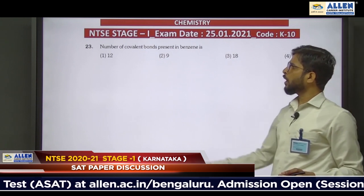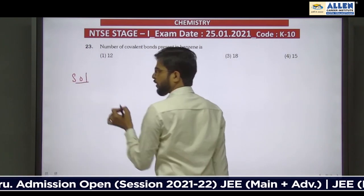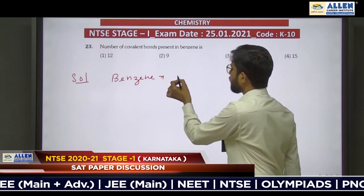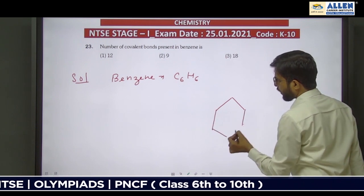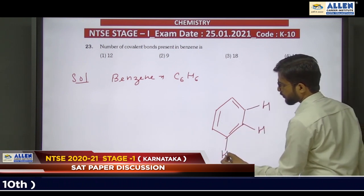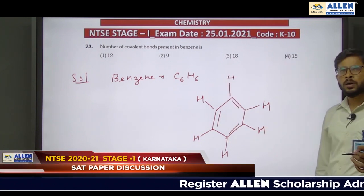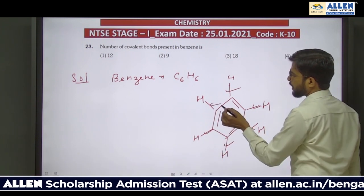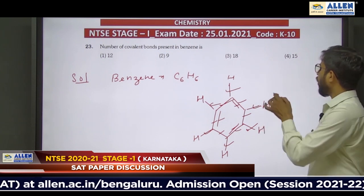Question 23: Number of covalent bonds present in benzene. The formula of benzene is C₆H₆. Drawing the hexagonal ring structure with alternating double bonds and 6 hydrogen atoms attached, counting all covalent bonds: 6 C-C single bonds, 3 C=C double bonds (counting each double bond as 2 covalent bonds gives 6), and 6 C-H bonds. Total: 6 + 9 + 6 = wait — counting directly: 15 total covalent bonds. Option 15 is correct.